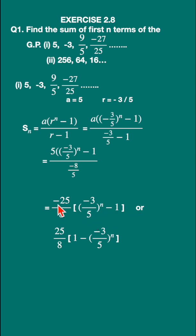You can take out the minus sign here, common outside the bracket, so that minus into minus will become plus. Plus 25 upon 8. When you remove minus outside the bracket, this expression will become 1 minus minus 3 upon 5 raised to n.